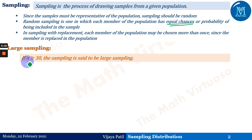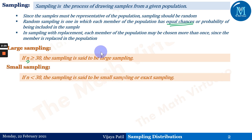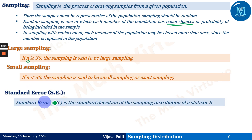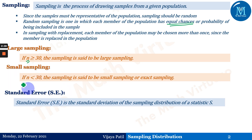A sample can be divided into two parts: large sample or small sample, depending upon the size of the sample. If n is greater than or equal to 30, the sampling is said to be large sampling. If n is less than 30, the sampling is said to be small sampling, also called exact sampling.